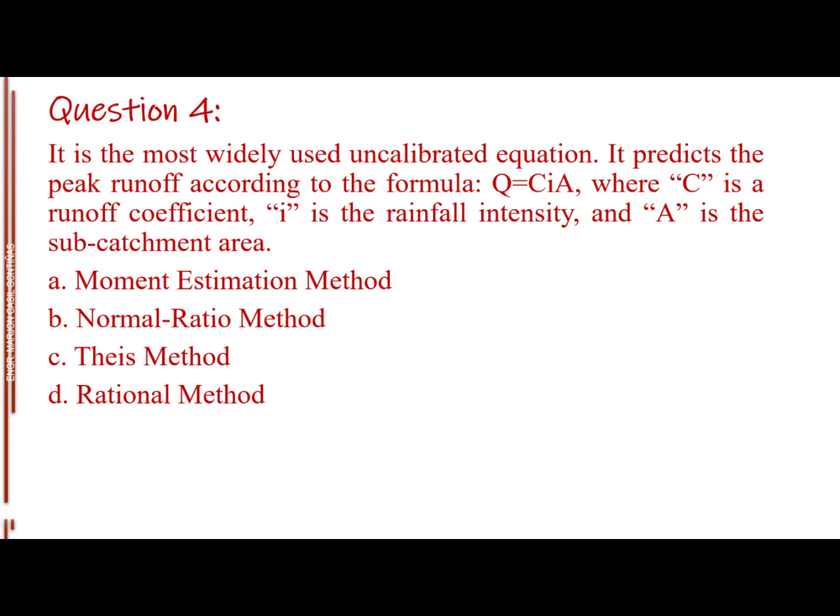Question number 4. It is the most widely used uncalibrated equation. It predicts the peak runoff according to the formula Q equals CIA, where C is a runoff coefficient, I is the rainfall intensity, and A is the subcatchment area. Letter A, moment estimation method. Letter B, normal ratio method. Letter C, Tice method. Letter D, rational method.